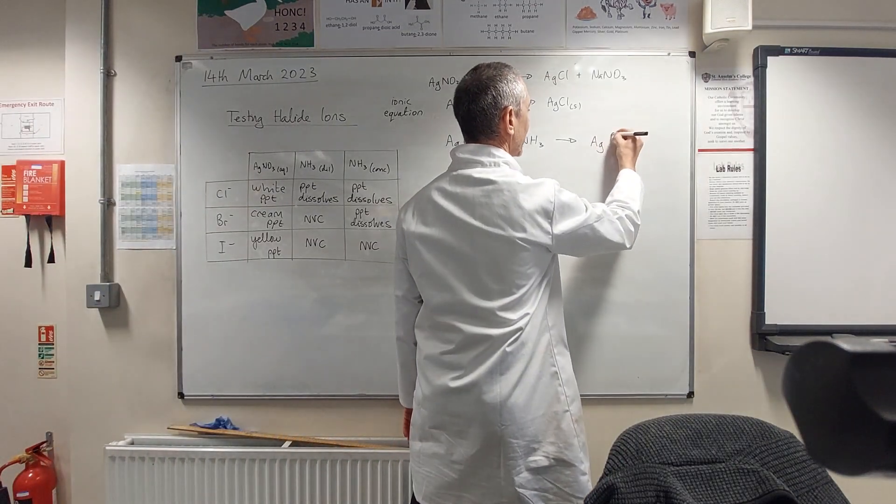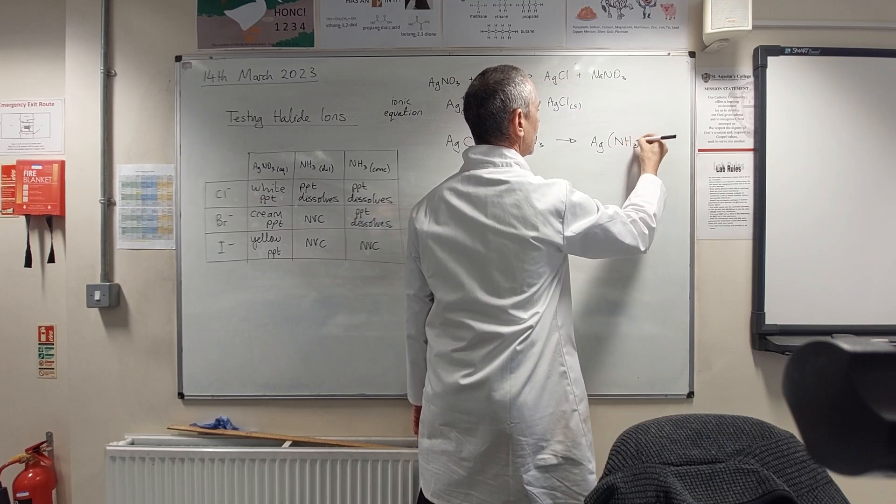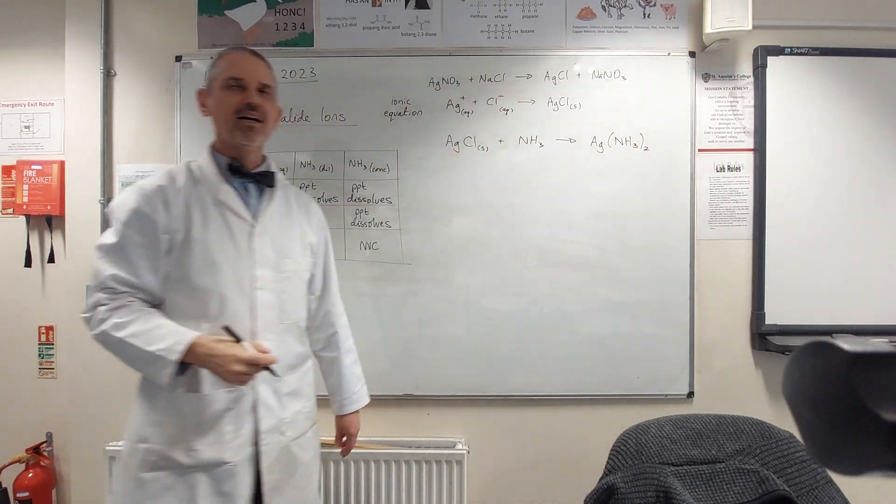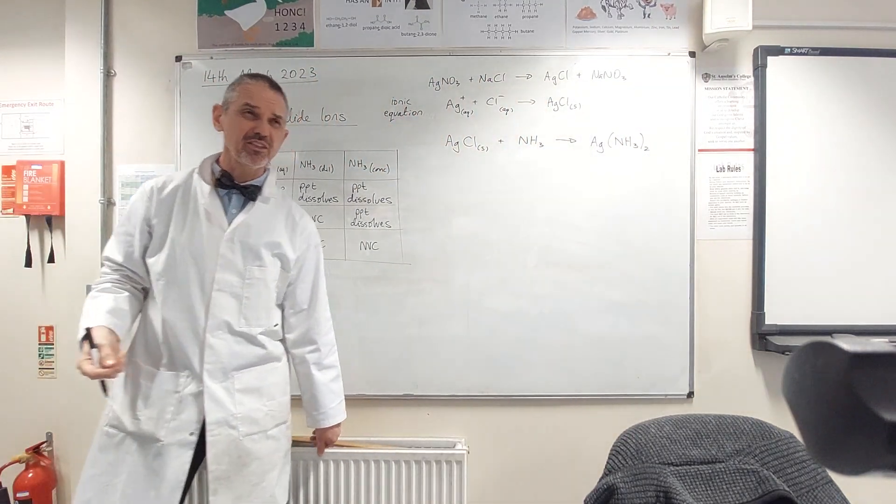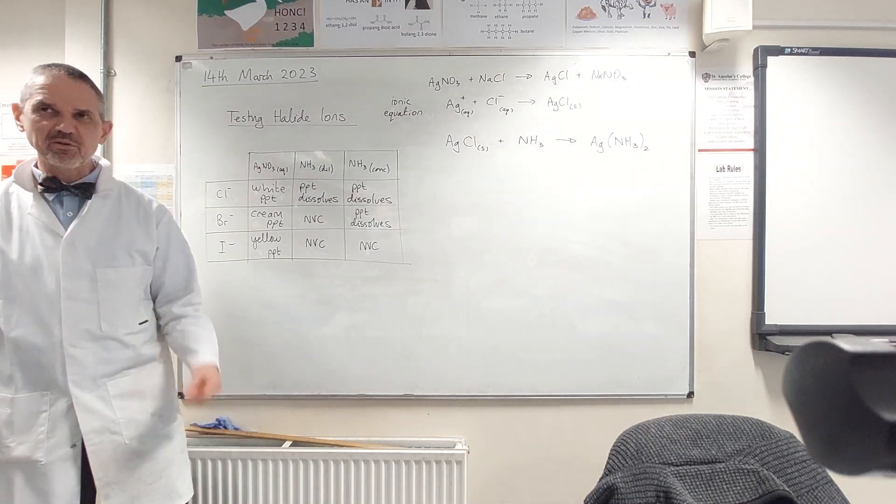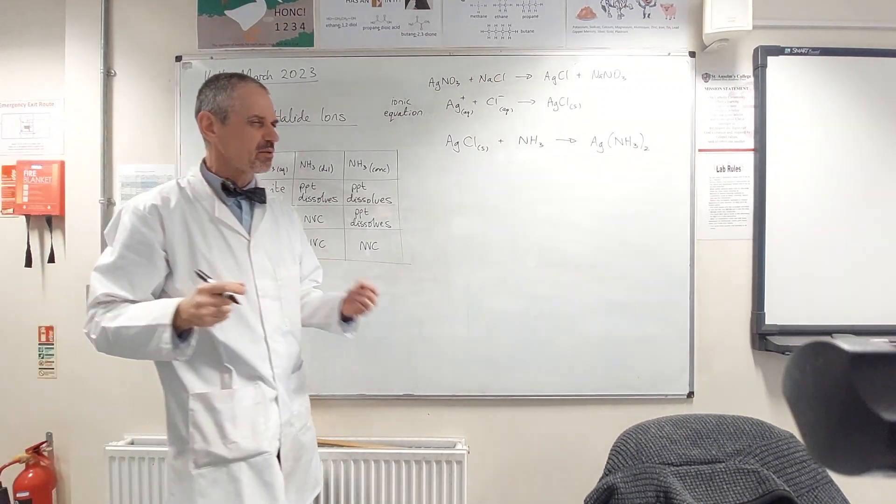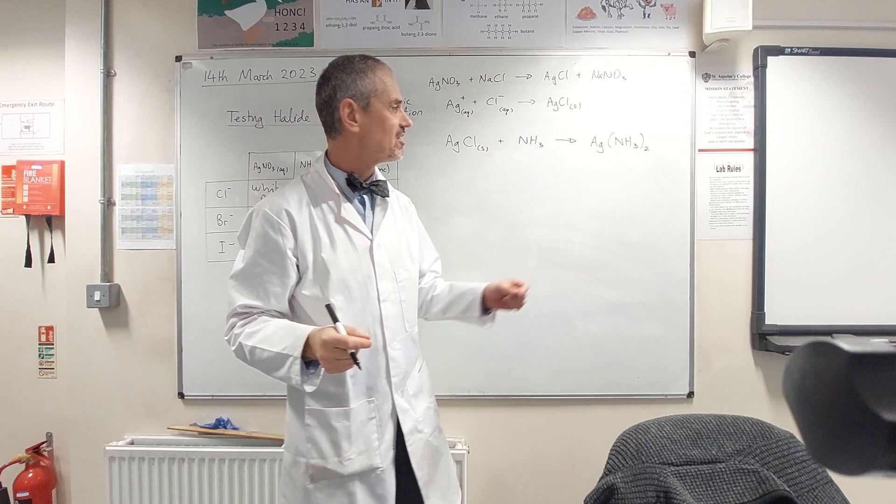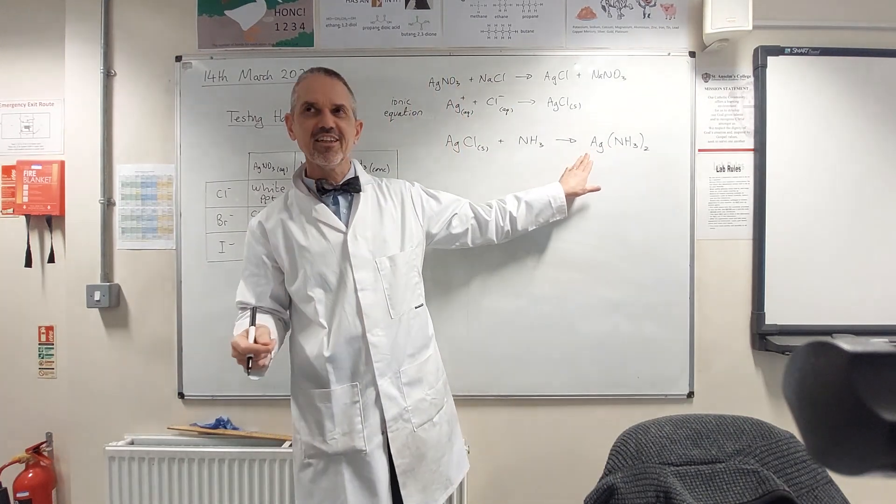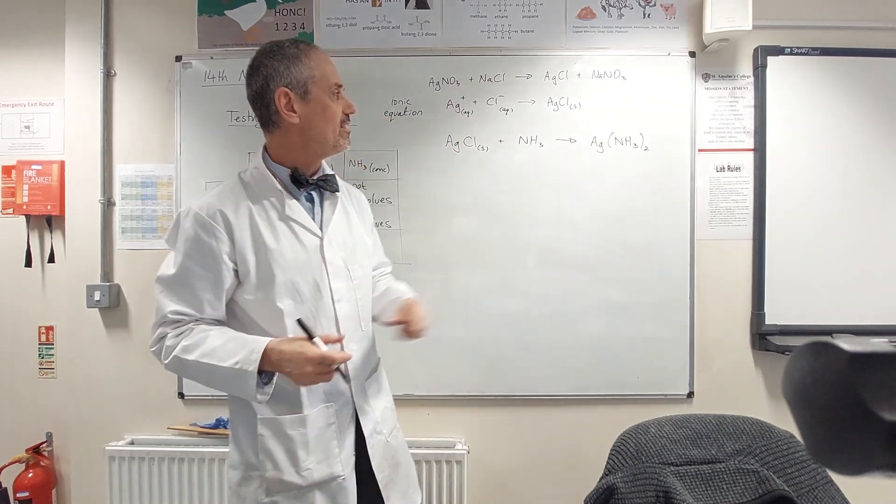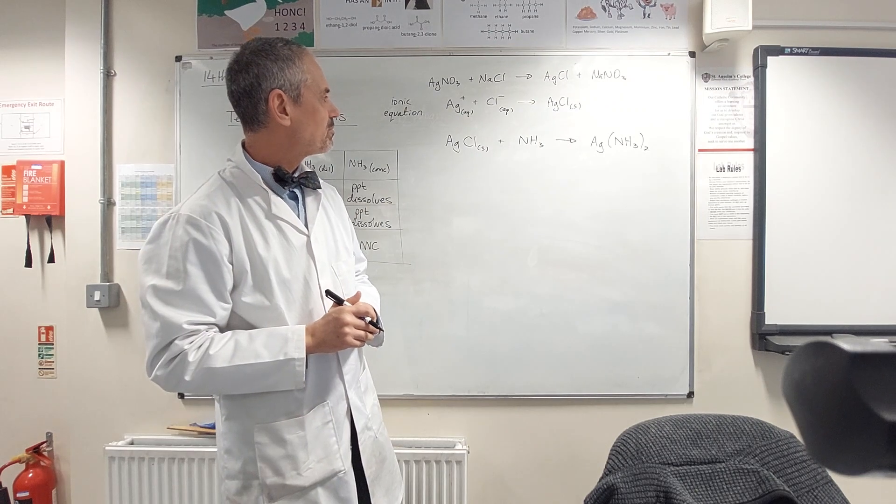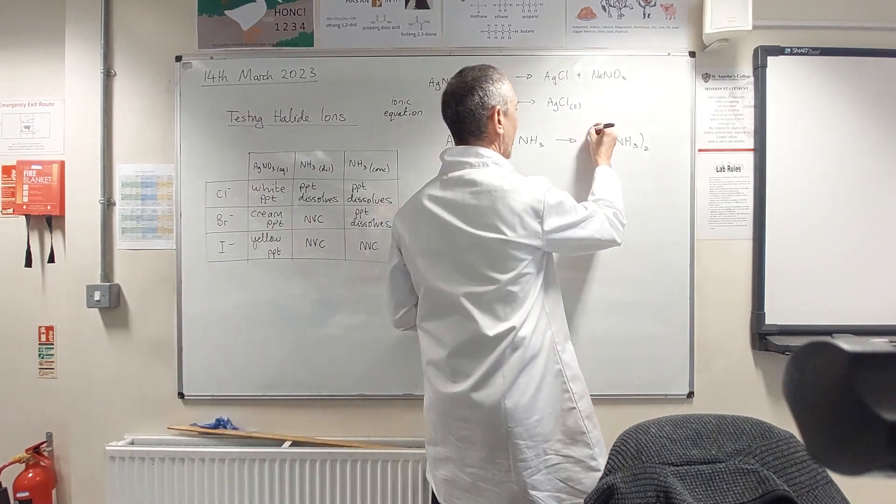That's that the silver can actually form a, it's called a coordinate covalent bond, you should have come across those before, but with two ammonia molecules, perhaps haven't come across coordinate covalent bonds between molecules and transition metal ions.